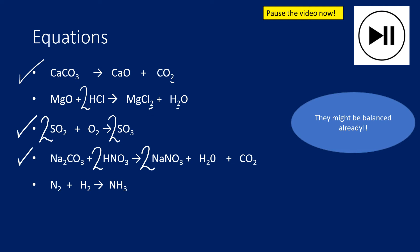Final equation: two nitrogens on the left and only one on the right, so I put a 2 in front to balance the nitrogens. Hydrogens on the left: two. Hydrogens on the right from 2NH3: six. So I put a 3 in front of H2, giving 3H2 = six hydrogens on the left. That equation is now balanced.